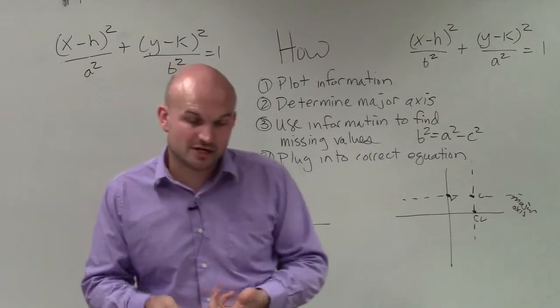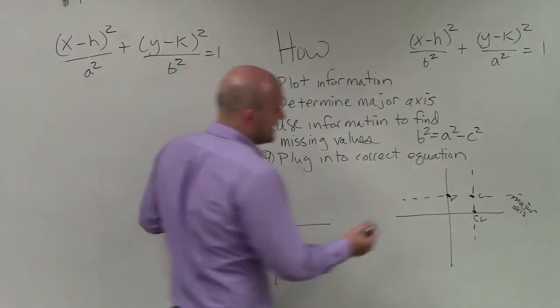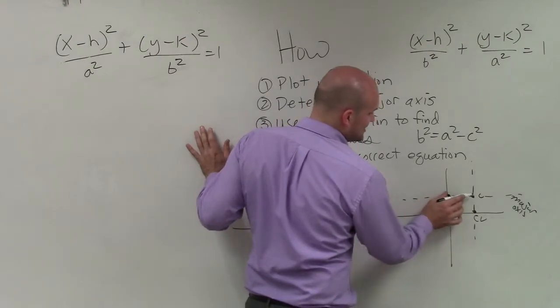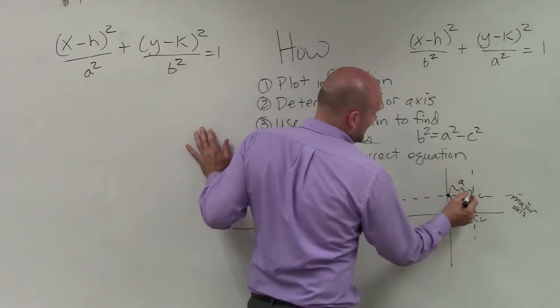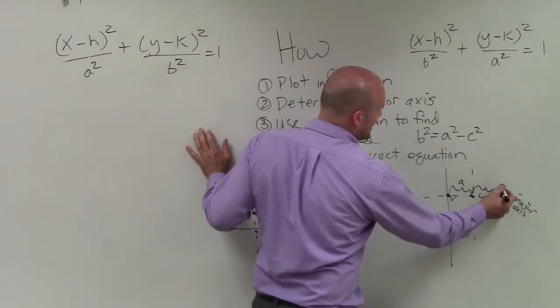Because remember, the major axis, what lies on the major axis is the center, the vertices, and the foci. And what's also important about them is the distance from the vertices to the center is a.